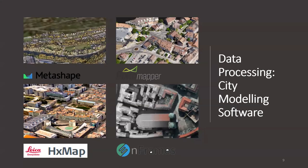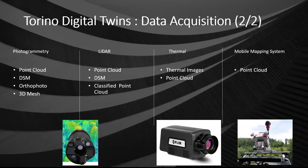Everything from sensors arrives in raw format, so the first stage is making it usable. For image processing, commercial software solutions — Metashape, Pix4D, Leica, nFrames — all work on the fundamental principle of bundle adjustment, but product quality varies across these solutions. We tried all of them to derive products from photogrammetry. From photogrammetry we get a dense point cloud, DSM, orthophoto, and mesh. Similarly from LiDAR we get a processed point cloud, DSM, and classified point cloud. We also acquired thermal imagery, which is very useful for building energy analysis.